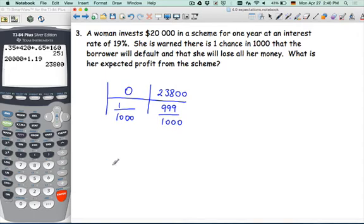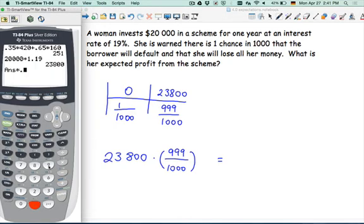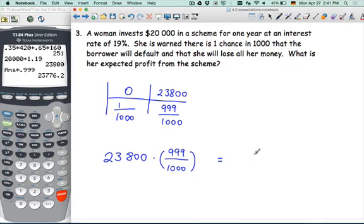So to find the expected value, I would multiply the probability with its corresponding payout and 1 over 1,000 times 0 would be 0. So I'm just going to multiply these two values. 23,800 times 999 over 1,000. That would be 23,000. And usually we write money to the nearest cent, so $23,776.20. I'd take that deal. Yeah, that's a great deal.